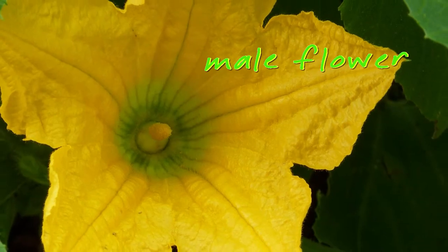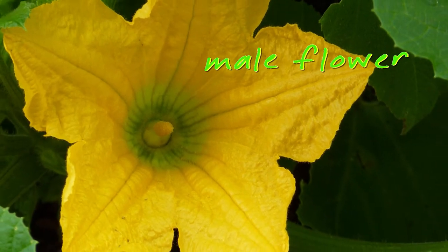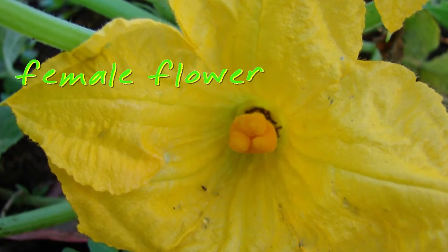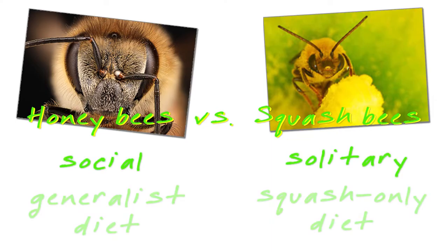Squash plants are pollinated by bees. They need pollinators to move the pollen from the male flowers to the female flowers to reproduce. Squash bees are a group of native pollinators. Unlike honey bees, squash bees do not live in large colonies and specialize in only collecting pollen from squash flowers.